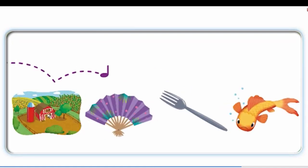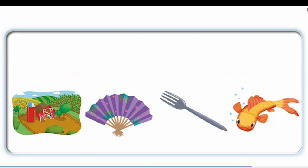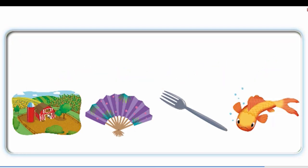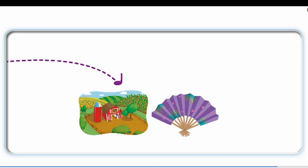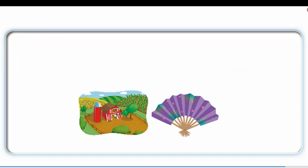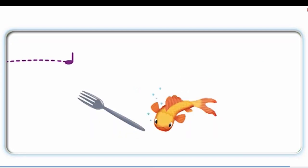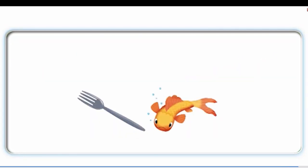Farm, fan, fork, fish. Farm, fan, fork, fish. Fish, fish, fish. It is a farm. It is a fan. It is a fork. It is a fish.